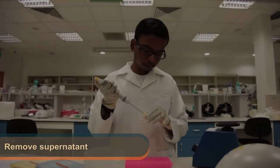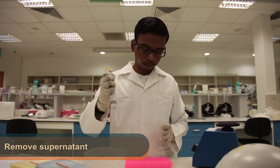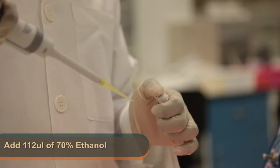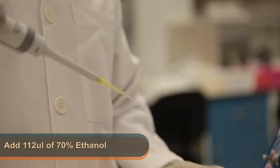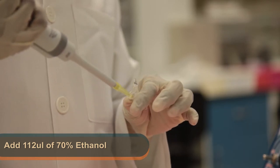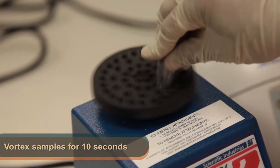Following this, carefully remove the supernatant without dislodging the cell pellet at the bottom of the tube. Then, add 112 microliters of 70% ethanol into the tube. This amount is twice the original sample volume. Vortex the sample for 10 seconds.